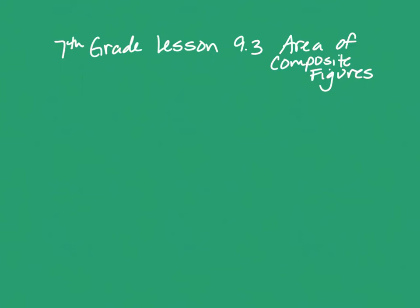7th grade lesson 9.3 is area of composite figures. Composite figures are those odd-shaped things that we need to find the area for and we don't have a formula for. This lesson is going to teach you the workaround.